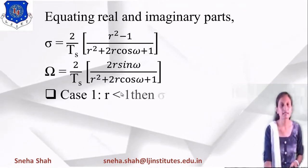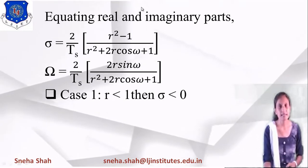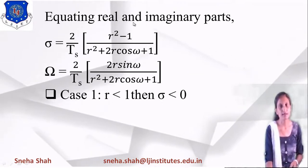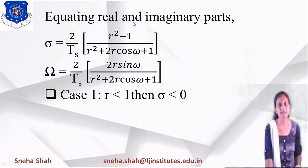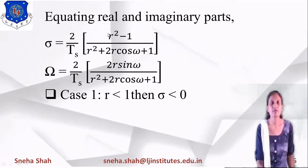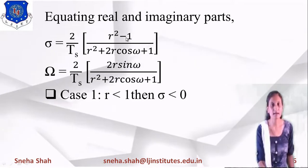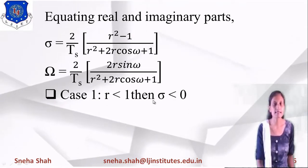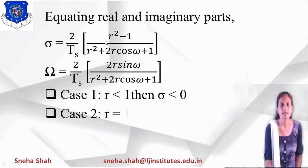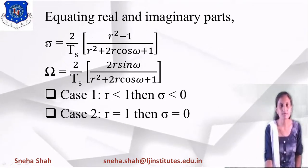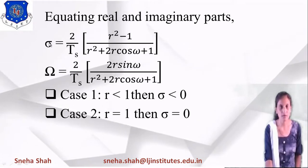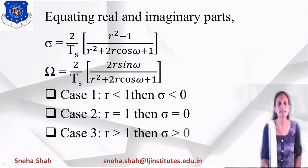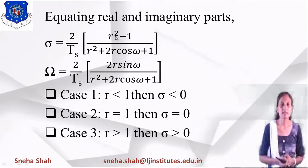From this we examine three cases. If r < 1, then r² - 1 is always negative, so σ < 0 — the left half of the S-plane. If r = 1, then 1 - 1 = 0, so σ = 0 — the jΩ axis. If r > 1, then r² - 1 is positive, so σ > 0 — the right half of the S-plane. This confirms stable input maps to stable output.